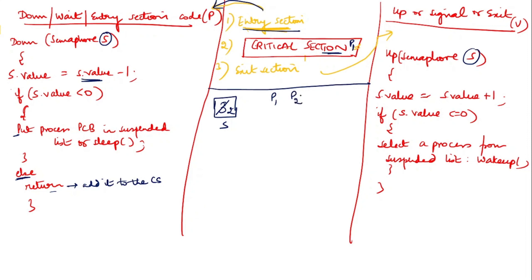P3 also comes and wants to enter. The semaphore value is decremented to 0. Since 0 is not less than 0, P3 also enters the critical section. Now P4 comes. The current semaphore value is 0, meaning no other process can enter. P4 executes the down code — value becomes minus 1. Minus 1 is less than 0, so P4 goes into sleep mode — the blocked process queue.